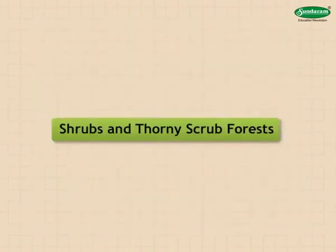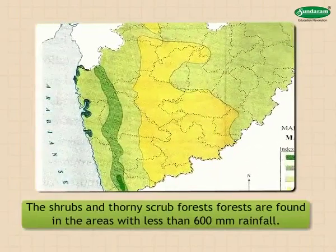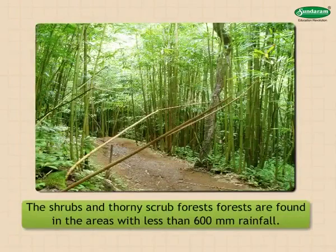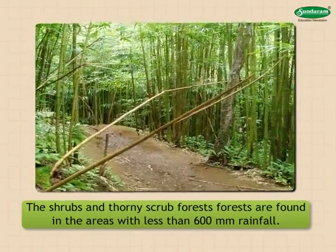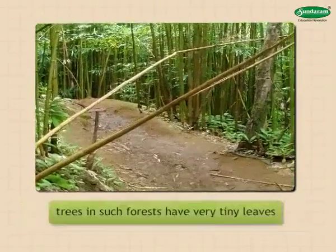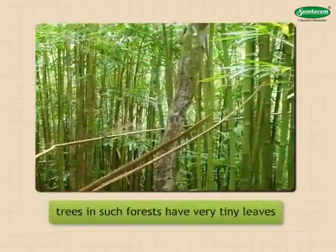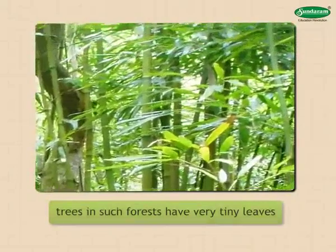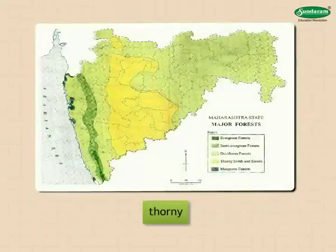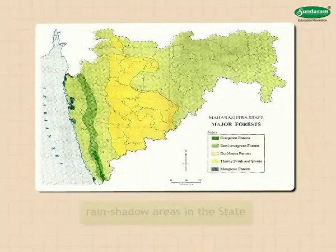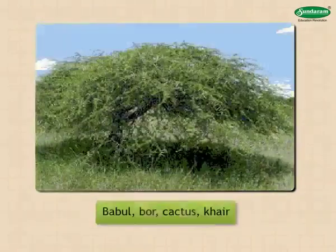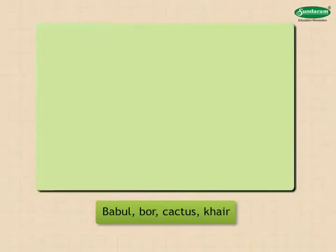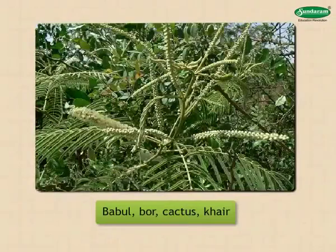Shrubs and thorny scrub forests are found in areas with less than 600 mm of rainfall. In order to maintain their water content, trees in such forests have very tiny leaves and are also thorny. These forests are typical of the rain shadow areas in the state. Babool, bor, cactus, kher, etc. are the major trees of these forests.